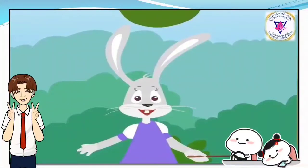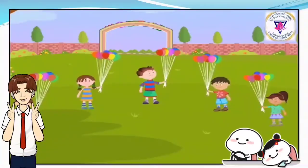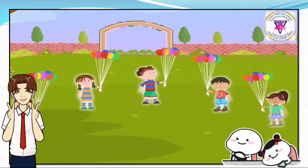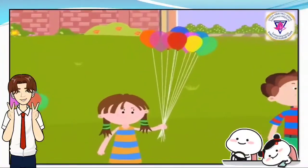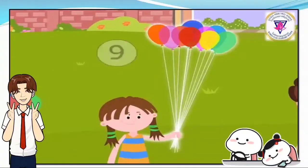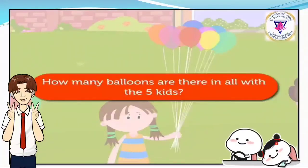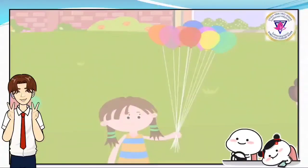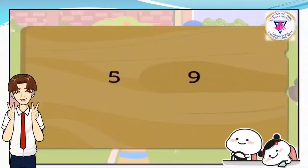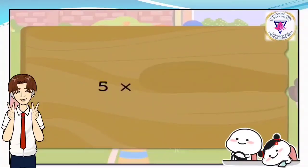Let us take another example. There are 5 kids and each kid has 9 balloons. How many balloons are there in all with the 5 kids? We multiply 5 and 9 to get the answer. 5 times 9 is equal to 45.